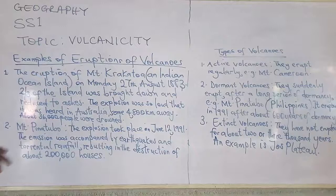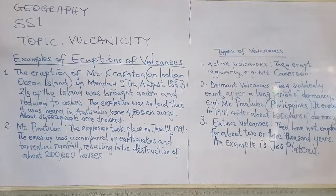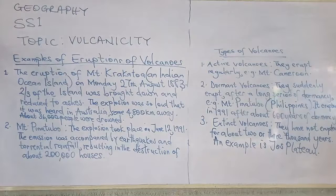Another type is dormant volcanoes. Volcanic mountains in this category suddenly erupt after a very long period of dormancy — they seem not to erupt again, but then suddenly they do. This is exactly what happened to Mount Pinatubo in the Philippines, which erupted in 1991 after about 600 years of dormancy.